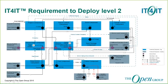From the detect-to-correct value stream, there are additional inputs coming into requirement to deploy that include incidents, problems, and errors, as these are work items that must come back into the build service solution to be remediated. Requirement to deploy information that goes to detect to correct includes requirements which feed into service contracts, and also requests to open requests for change in the change management processes. Requirement to deploy also feeds into service catalog entries and ultimately the desired service model, which are stored and managed in the request to fulfill value stream.